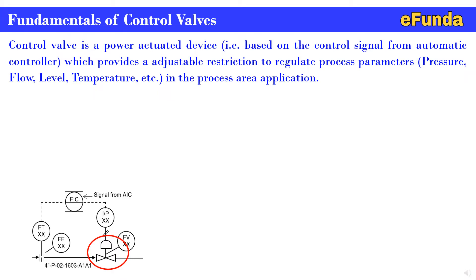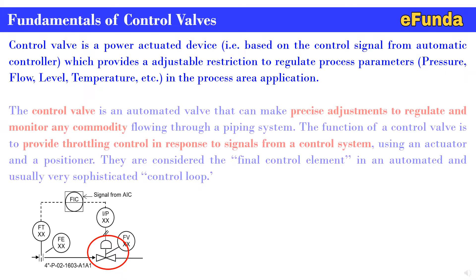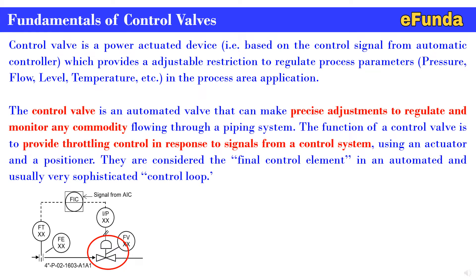One can see the loop where we have connected the actuated control valve, where the signal is coming from the FIC controller to the I2P converter, and then pneumatic air is supplied to the control valve so as to have the regulated output with respect to the 4 to 20 milliamp signal from the FIC controller.